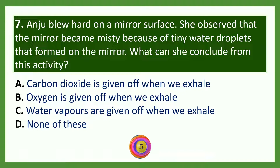Which of the following statements is not true regarding both stomach and heart? Option A — both are internal organs; option B — both are muscular organs; option C — both are organs of the circulatory system. The answer is option C. Stomach is an organ of the digestive system; heart is an organ of the circulatory system.